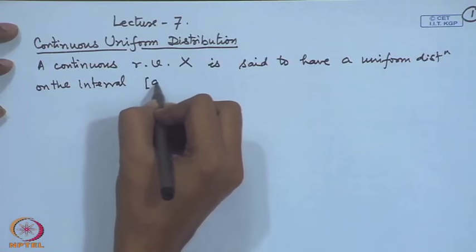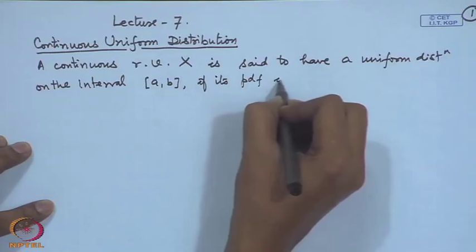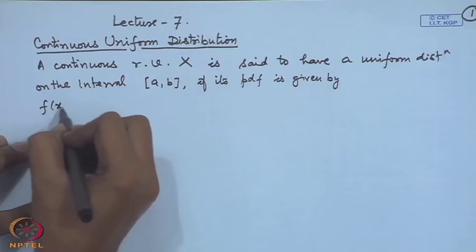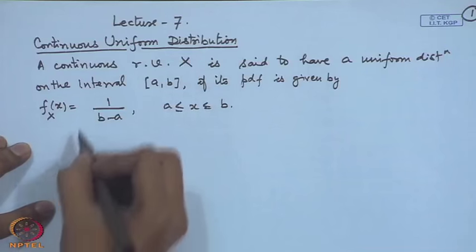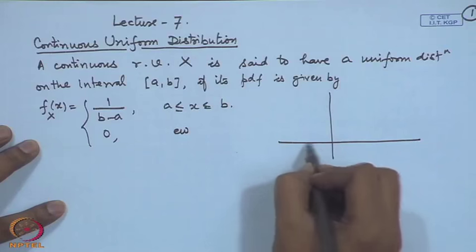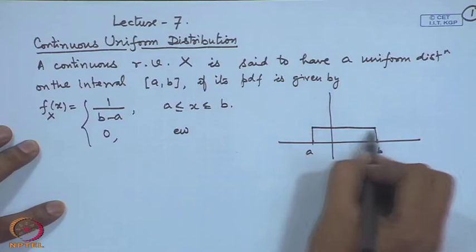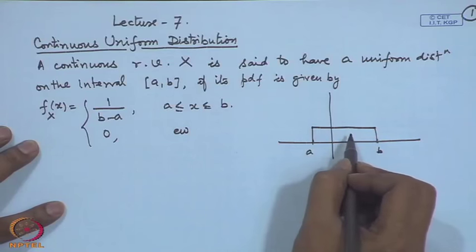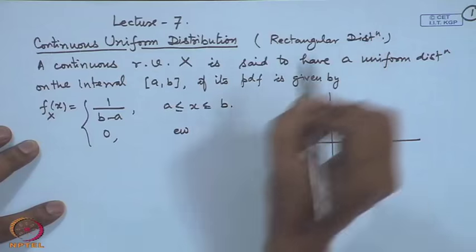Here one may take an open interval or closed interval — it will not make any difference. The probability density function is f(x) = 1/(b−a) for a ≤ x ≤ b, and 0 elsewhere. If you make a plot of this, you can see it looks like a rectangle, which is why there is another name for this distribution: it is also called the rectangular distribution.